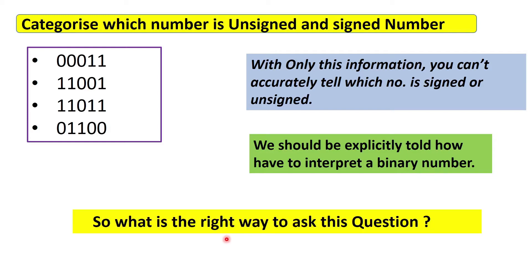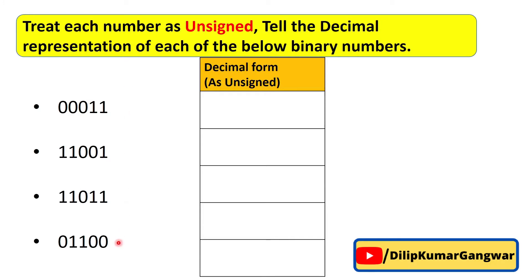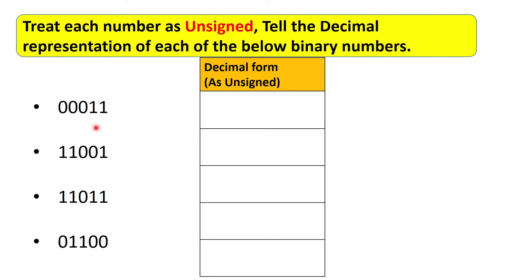We should be explicitly told by the person asking the question how we have to interpret a given binary number. So the question is: what is the correct way to ask this question? One correct way is: you are given these four binary numbers and you are told to treat each number as an unsigned number, then find the decimal form of each of these binary numbers.